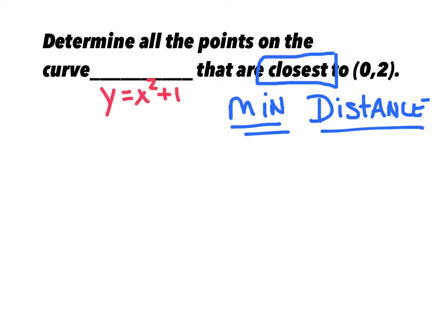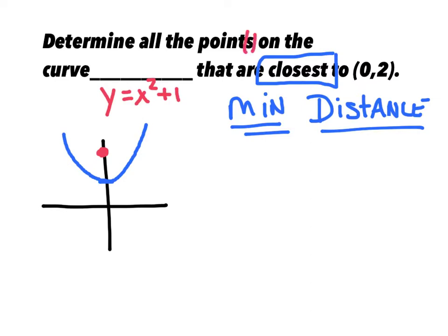So let's get that in our notebook and be very clear that our goal is to minimize the distance. I'm going to first sketch this out. I've got a nice parabola, y equals x squared, just shifted up 1. And I have this point 0, 2, which would fall here. The question says points, meaning plural — we could have more than one. Would I be way out here? I think you would agree you'd have to fall someplace maybe here or here to be closest to this point.